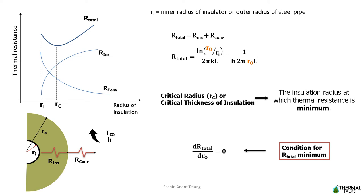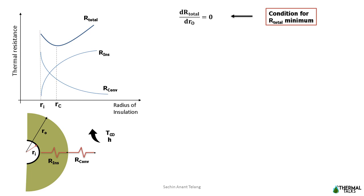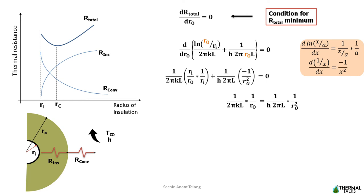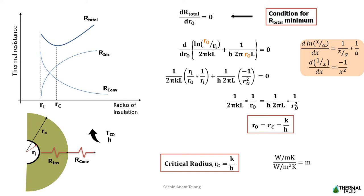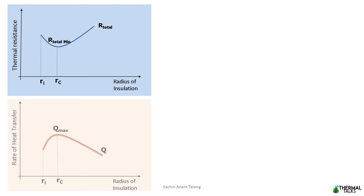Let me remind you that Ri, the inner radius of the insulator, is a fixed value. So thermal resistance always depends on the value of Ro, the outside insulation radius. Differentiating the total thermal resistance with respect to Ro, and by rearranging the terms, we get the value of Ro that is the critical radius, where total thermal resistance is minimum. It is the ratio of thermal conductivity of insulating material K divided by the convective heat transfer coefficient H.